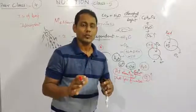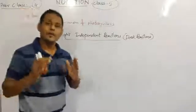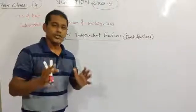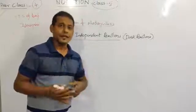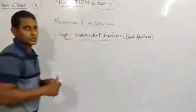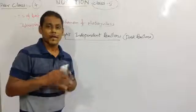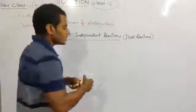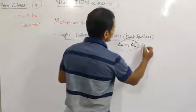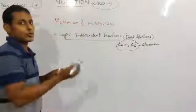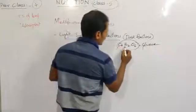Next are light independent reactions - reactions that don't depend on light. These can take place in daytime or nighttime. These are also called dark reactions or biosynthetic reactions. In these reactions, a very important compound is formed: C6H12O6, which is glucose.